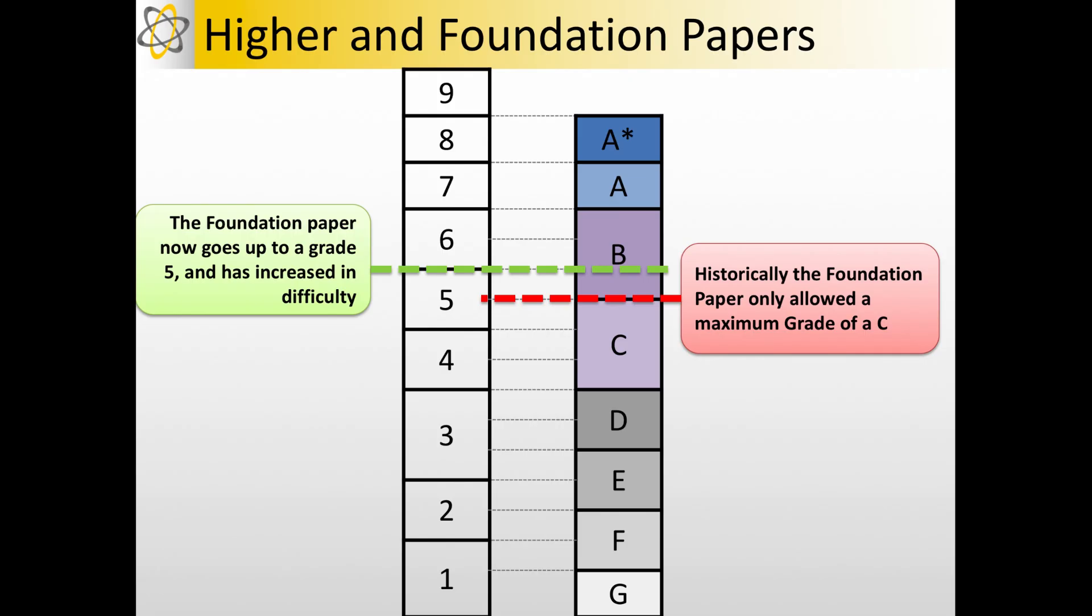The other consideration is that historically the lowest grade you could have got on a Higher Paper is a Grade D. And if you missed that Grade D, you would have then got a U if you didn't meet the number of marks required to get the Grade D.